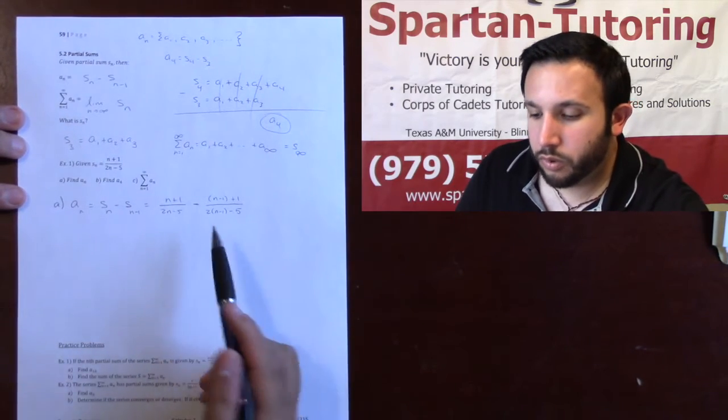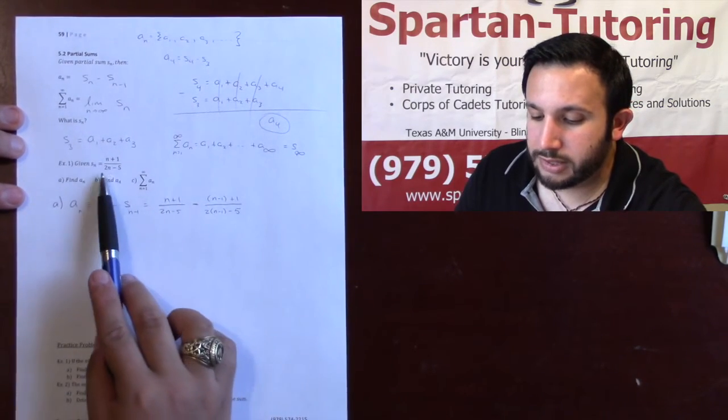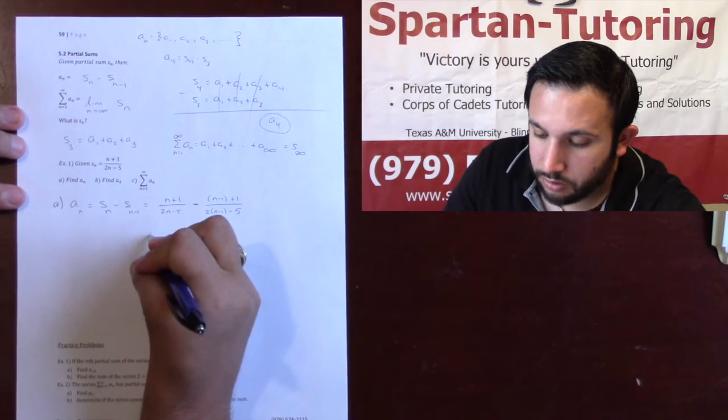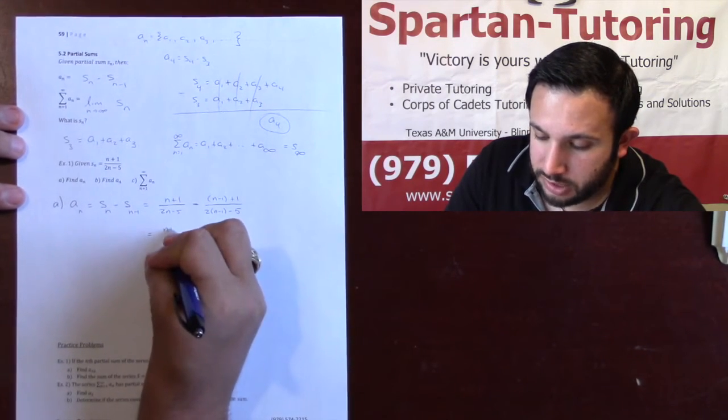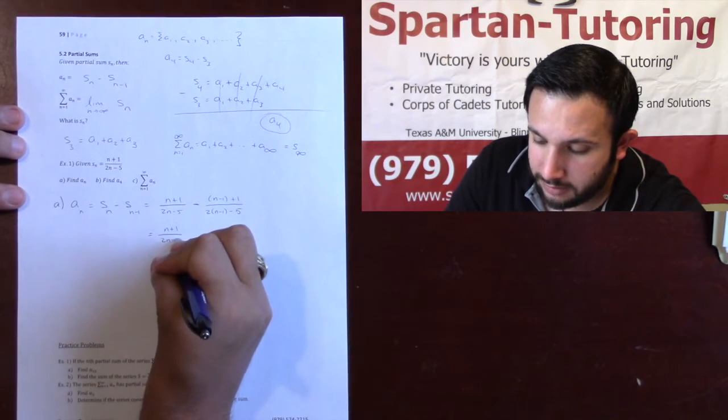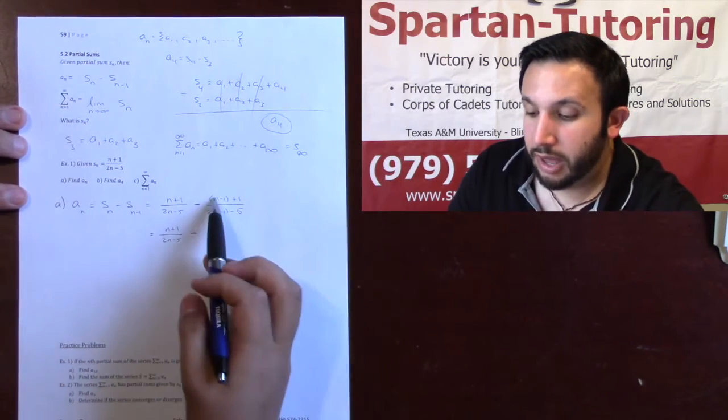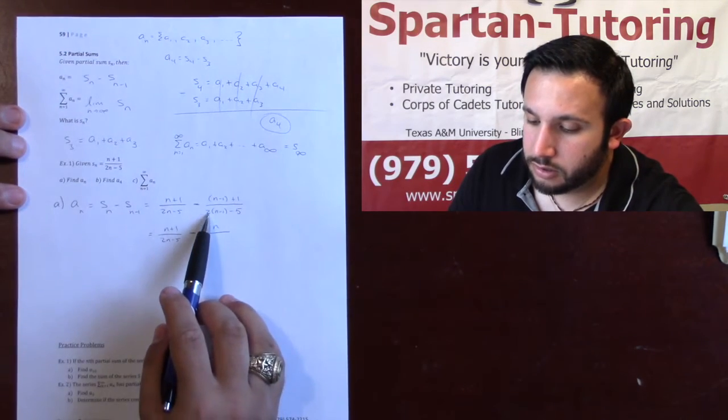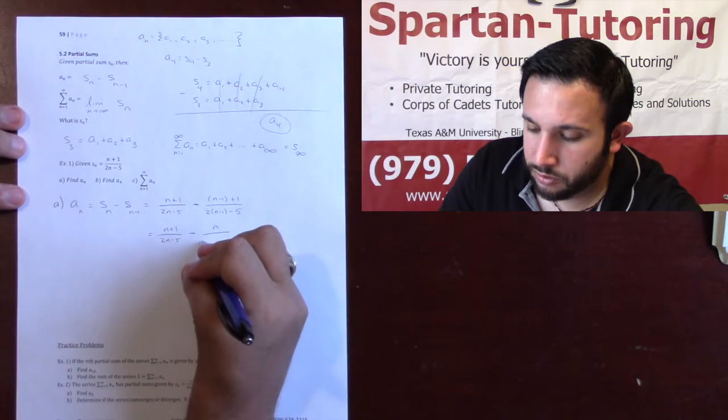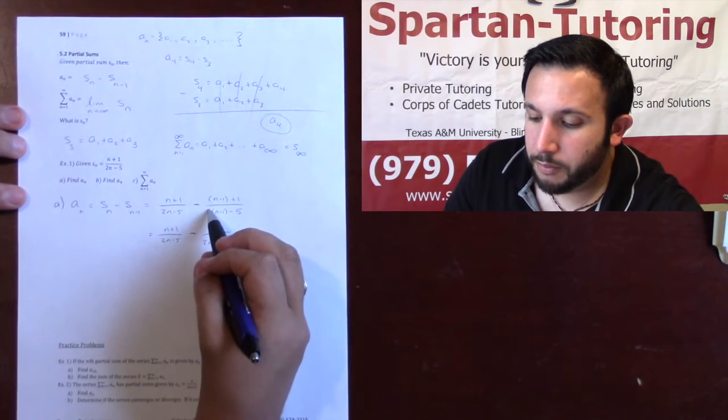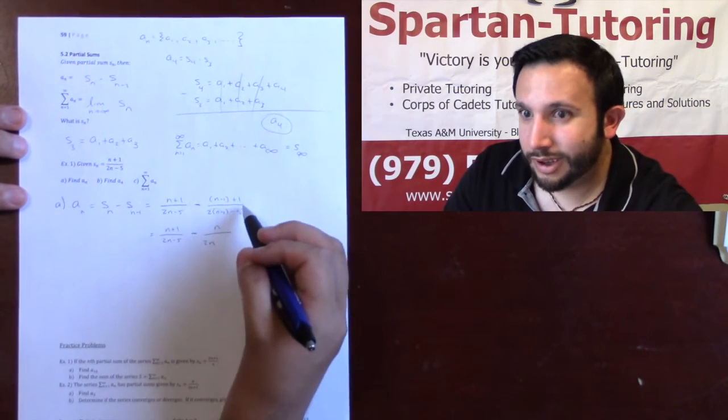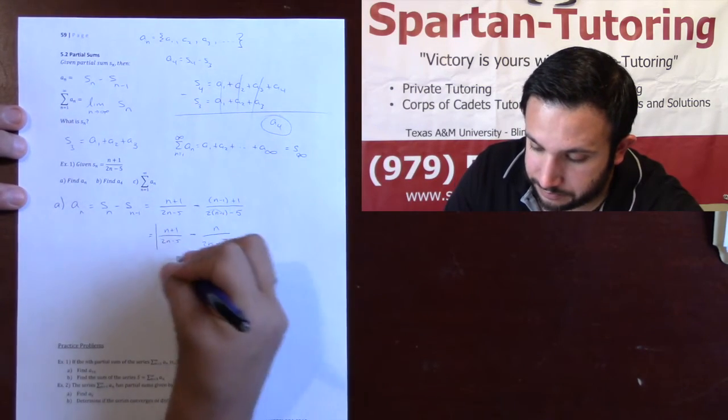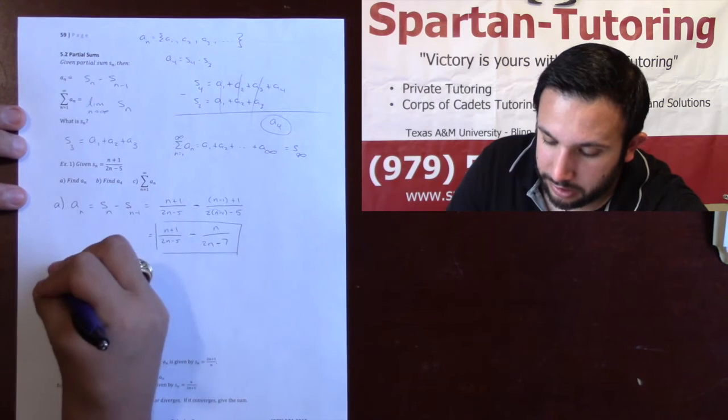You're not just subtracting 1 from everything. You're replacing every n with an n minus 1. So here, this is still n plus 1 over 2n minus 5. Then minus, here, n minus 1 plus 1 is n. And here, 2 times n is 2n. But then I'm going to have minus 2, and then minus that 5 is minus 7. So that's part A.